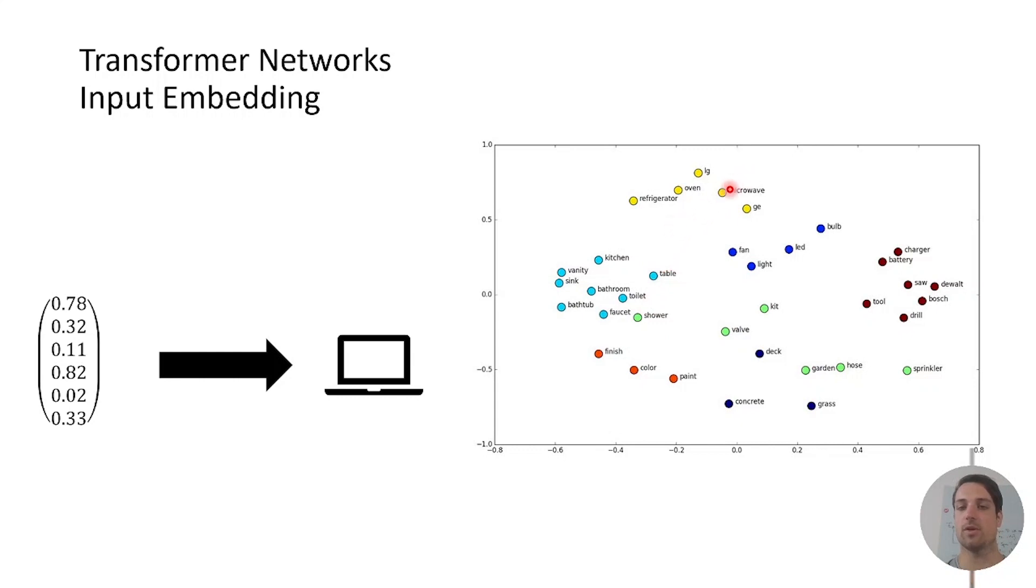For example words within similar word groups are put together inside of the embedding space. As you can see here for householding gadgets, microwave, oven and refrigerator are put together. So this makes it easy for the algorithm to understand the words better just by numerical values.